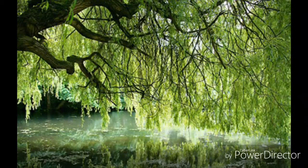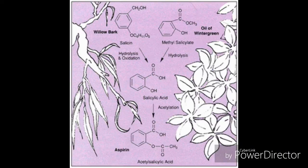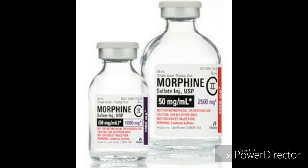The second, possibly even more widely known over-the-counter pharmaceutical, is aspirin, which was originally taken from the white willow tree. Scientists were able to find out that it was salicylic acid, synthesize it, and create what is now known as aspirin. We also have morphine, which is a prescription medication originally taken from the poppy plant.